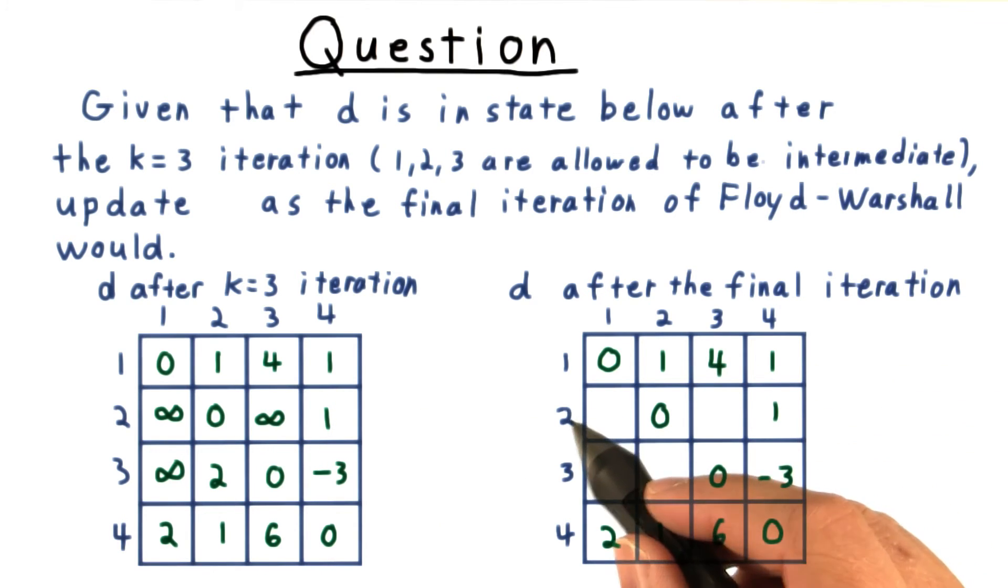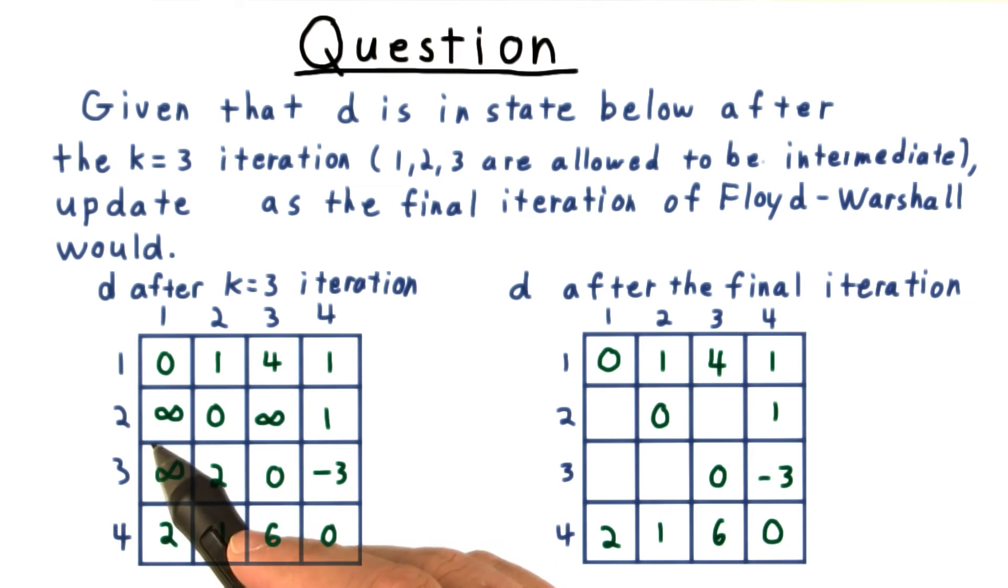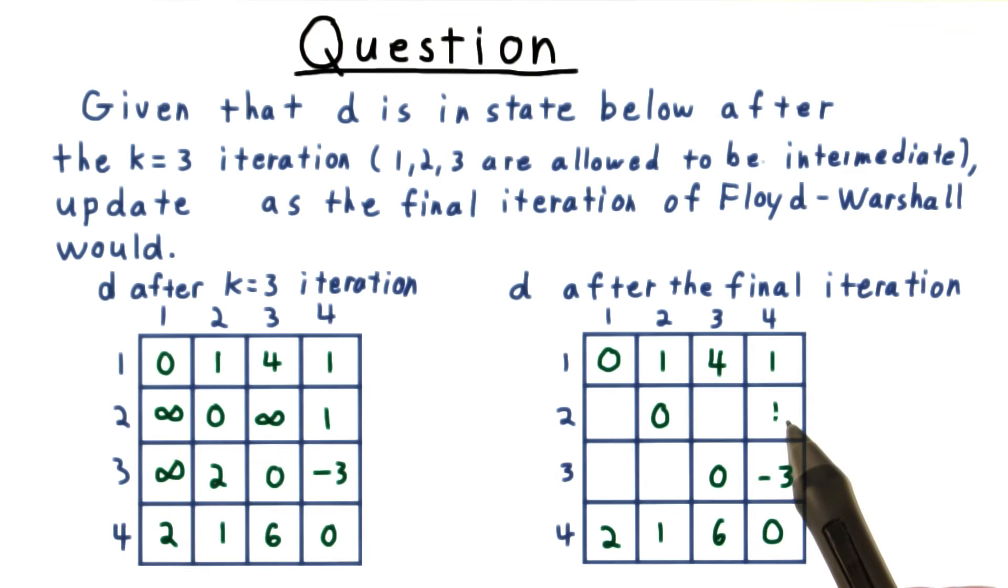How about going 2 to 1? Well, there is no old path, but there is a path through 4. I could go from 2 to 4, that would cost 1, and then from 4 to 1, which would cost 2 more, for a total of 3.